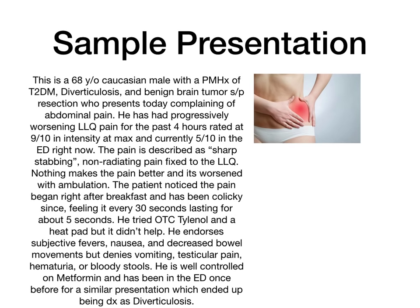This is a 68-year-old Caucasian male with a past medical history of type 2 diabetes, diverticulosis, and a benign brain tumor status post-resection, who presents today complaining of abdominal pain. He's had progressively worsening left lower quadrant pain for the past four hours, rated at 9 out of 10 in intensity at its maximum, but currently 5 out of 10 in the ED. He describes the pain as sharp and stabbing, non-radiating, fixed to the left lower quadrant. Nothing makes the pain better and it's worsened with ambulation.